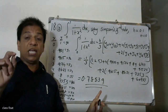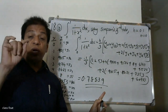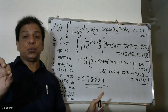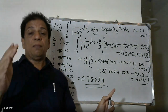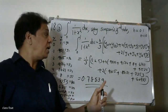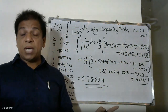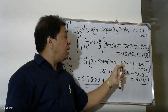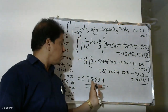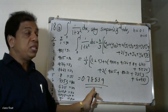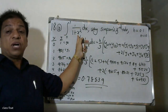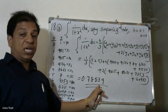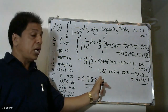To summarize: using h/3 into the bracket of [first plus last term y0+y10, plus 4 into odd terms y1+y3+y5+y7+y9, plus 2 into even terms y2+y4+y6+y8], we substitute the values and calculate the answer as 0.7853. This value corresponds to the integral of 1/(1+x²) from 0 to 1.